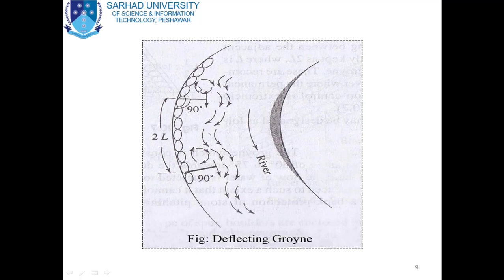After striking the first groin, the water moves toward the next groin. When the flowing water strikes each successive groin, the velocity decreases progressively. The water then moves slowly in the river without causing any disturbance or erosion. These are the different types of groins constructed on the sides of river banks to protect them from erosion.